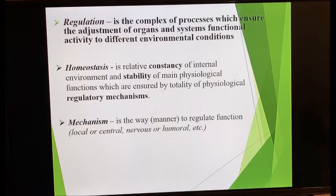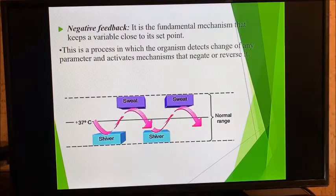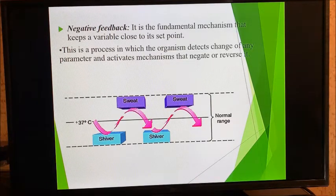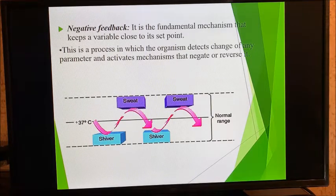Mechanism simply means a way of doing something — the way the body is able to regulate its function is called a mechanism. Negative feedback is a fundamental mechanism that keeps a variable close to its set point. It is a process in which the organism detects changes of any parameter and activates mechanisms that negate or reverse it — for example, the buffer system of your body when there is a change in the acidity or alkalinity of your blood.